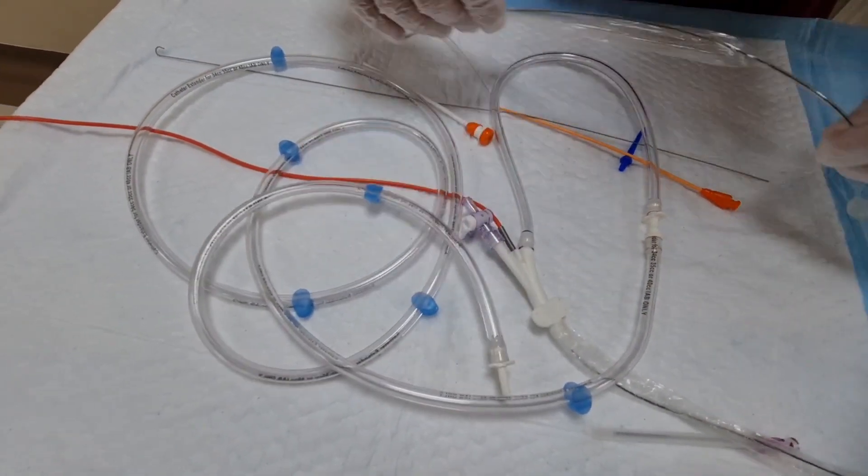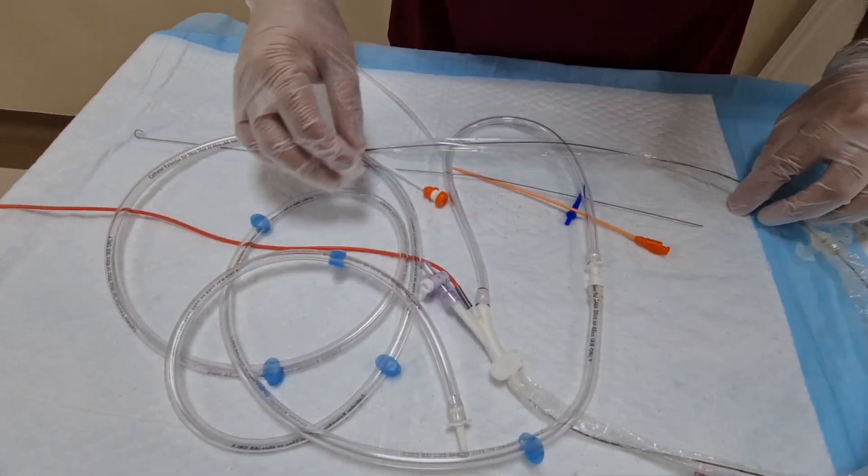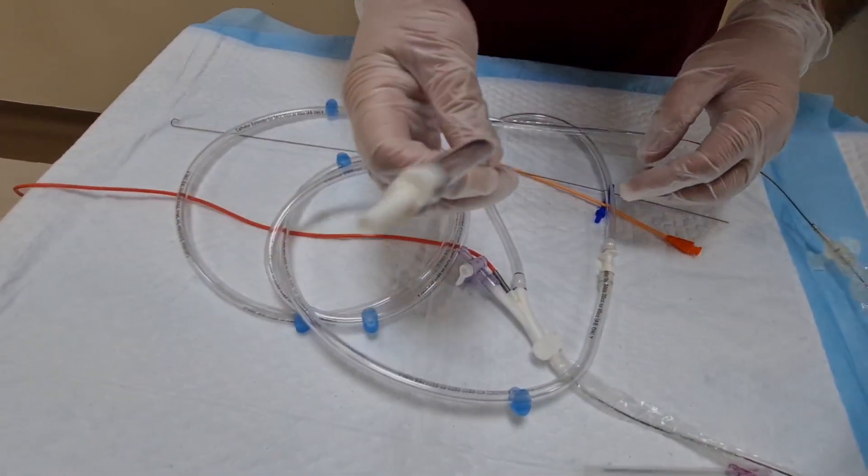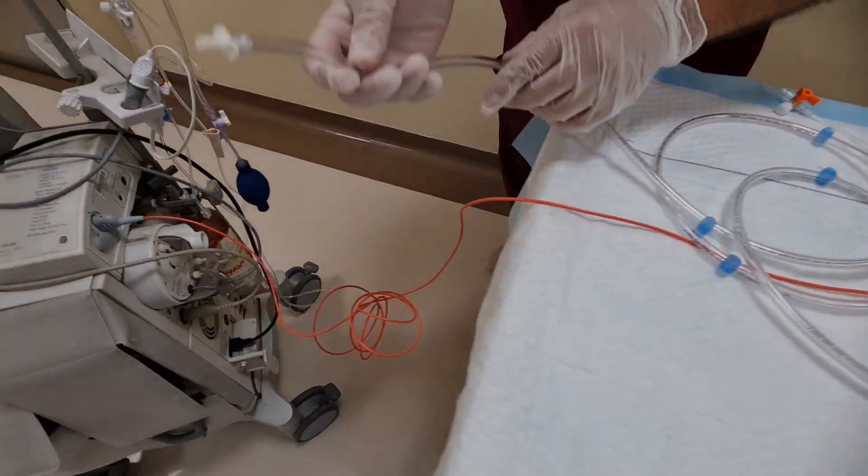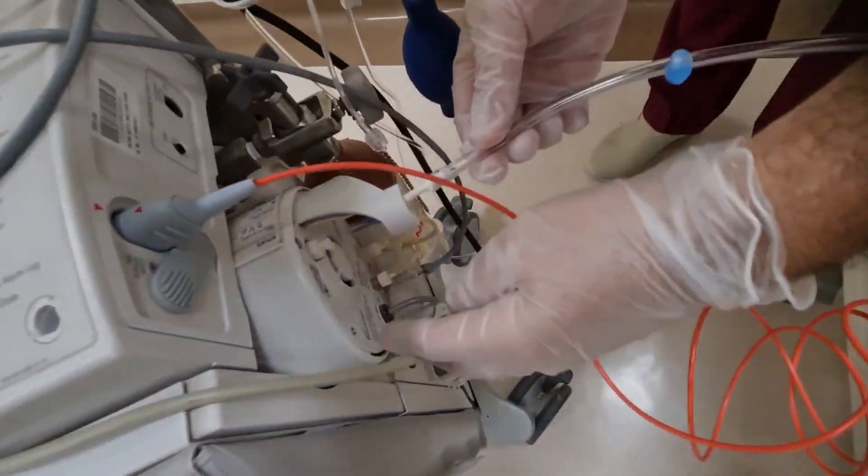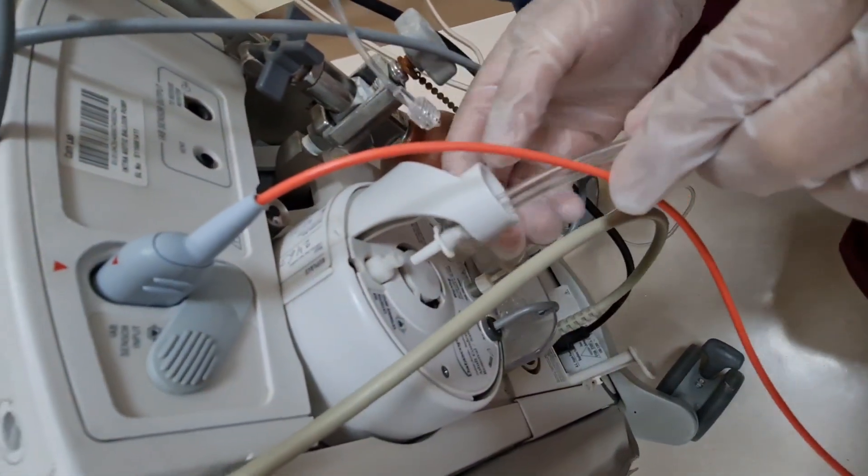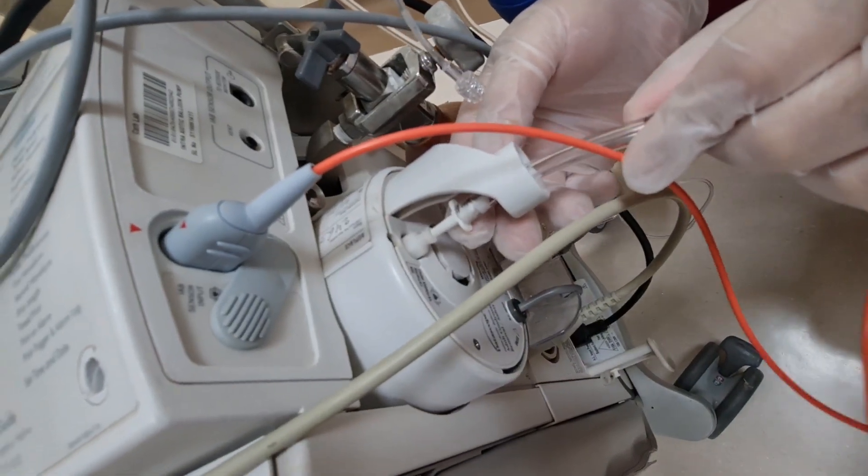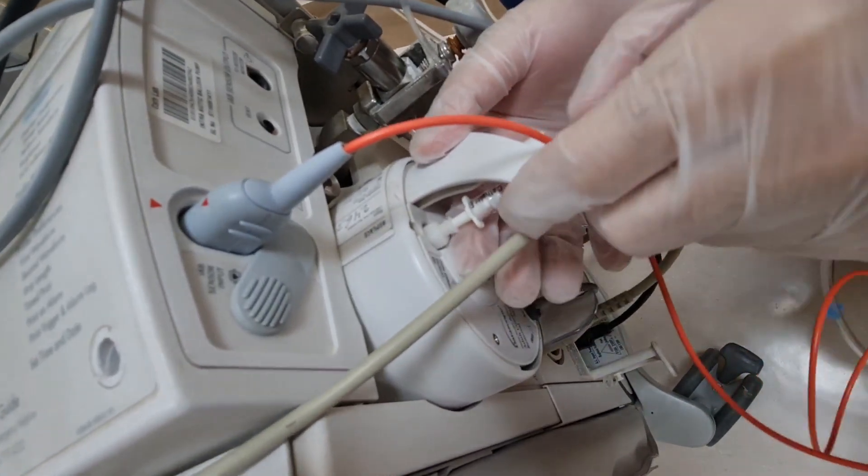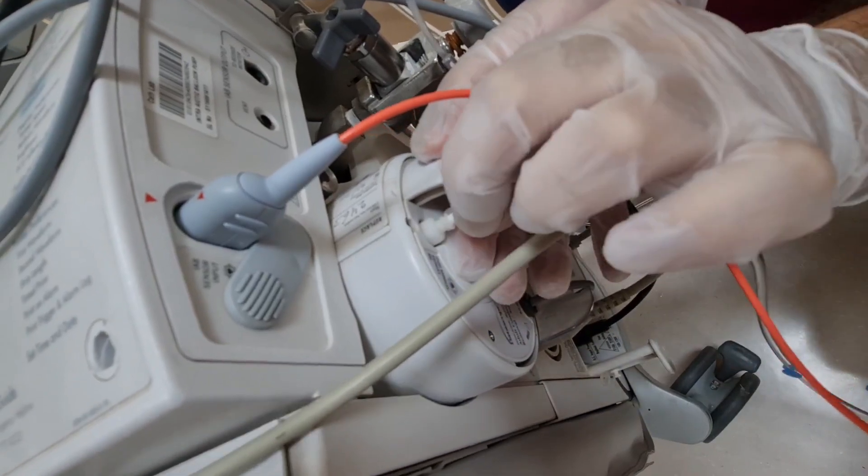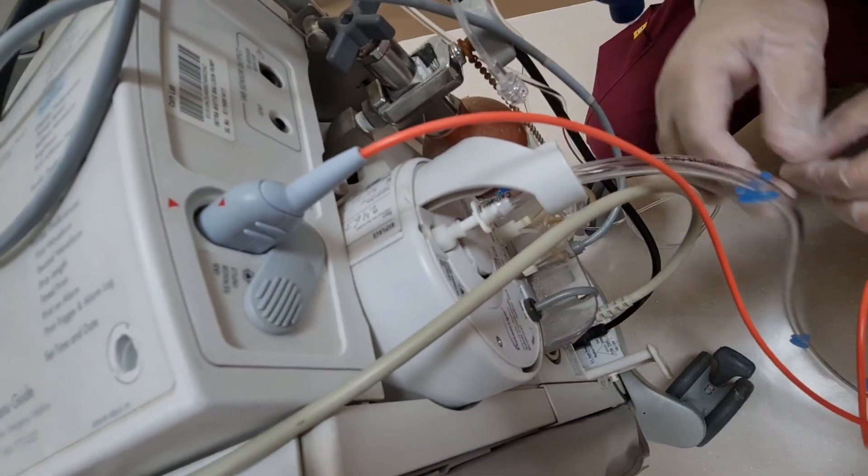Now after this, connect this tubing to the back side of the machine. Here you can see, this is the place, this is the point where you have to connect it. Once you insert this way, just try to connect it like this. Once it's connected, now we are ready.